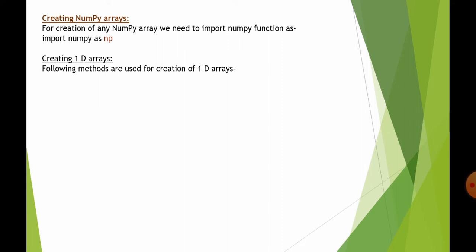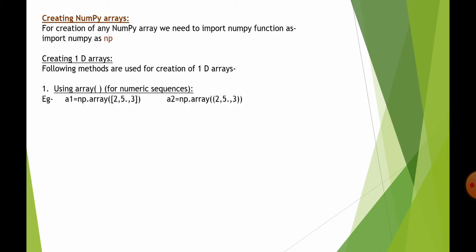Let's create 1D arrays. The following methods are available. First is the array() function, used for numeric sequences — that is, sequences in the form of numbers. For example, suppose we have elements 2, 5.0, 3. Here, 5.0 symbolizes a float (decimal) number, whereas 2 and 3 are integers. In a2, we have the same elements, but the only difference between a1 and a2 is that a1 is created from a list, whereas a2 is created from a tuple. Since both consist of numeric sequences, we can use the array() function.